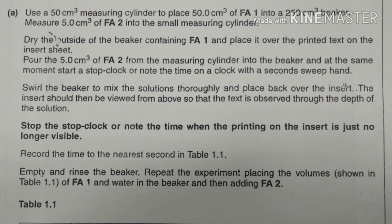Pour the 5 cm³ of FA2 from the measuring cylinder into the beaker, and at the same moment start a stop clock or note the time on the clock with a second sweep hand. Swirl the beaker to mix the solutions thoroughly and place it back over the insert. The insert should then be viewed from above so that the text is observed through the depth of the solution.